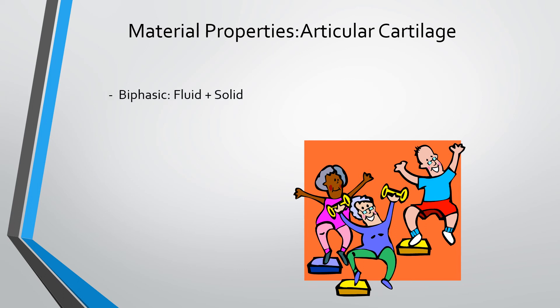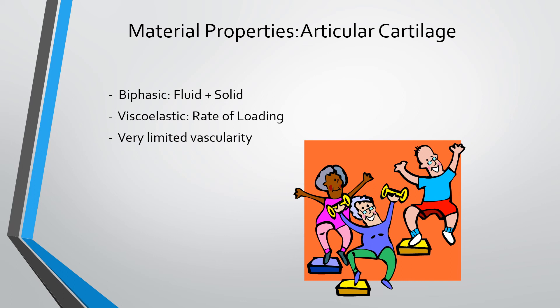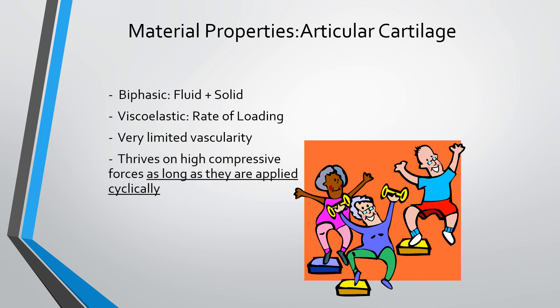Articular cartilage has a very high proportion of water and is also a viscoelastic material — the faster it is loaded, the stiffer it becomes. It has very limited vascularity, only near the subchondral surface of the bone, yet still needs nutrition and oxygenation. Compressive loading is required, and joint surfaces thrive on cyclic high compressive load, which squeezes out the synovial fluid that bathes and nourishes them and allows it to soak back in during low compression.